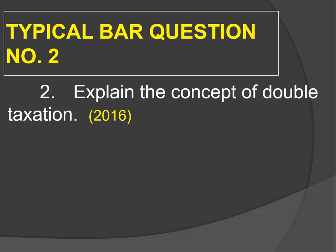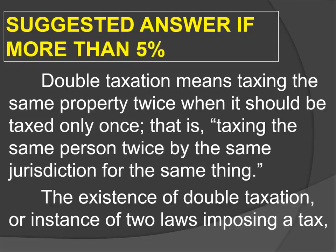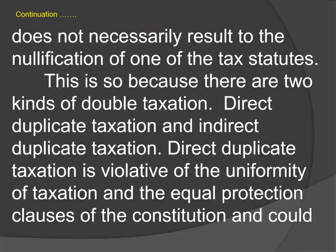Let's have a look at another concept — typical bar question number two: explain the concept of double taxation. Look at the subject weight. Is it 5% or less, or is it more than 5%? The 5% or less answer is truncated, more than 5% is an expanded answer. Review this later on and internalize the reasoning process behind it.